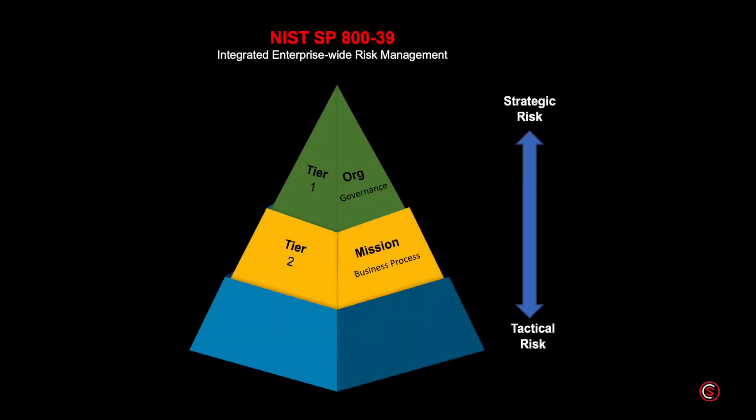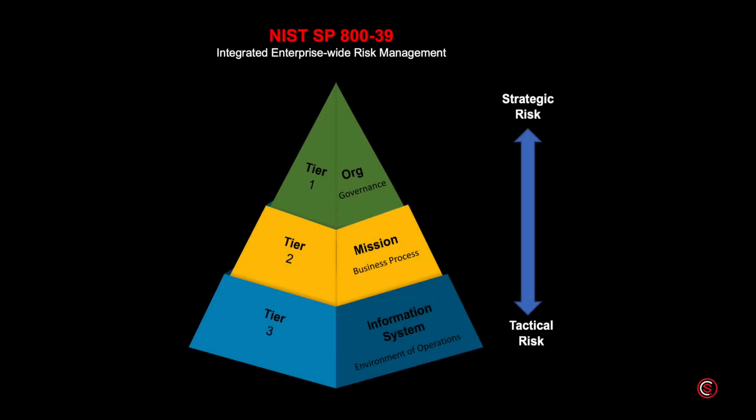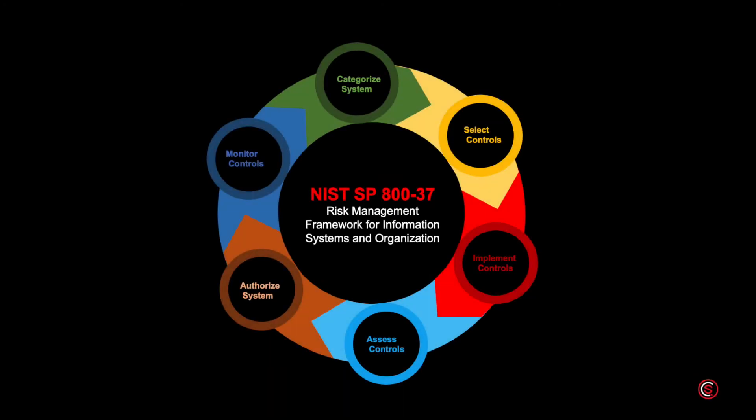Tier two addresses risk from a mission and business process perspective, guided by risk decisions at tier one. Here we define and prioritize core missions and business processes with respect to organizational goals. Tier three is more technical, addressing risk from an information system perspective guided by tiers one and two. This is where NIST Special Publication 800-37 — the Risk Management Framework — comes into play, providing a disciplined and structured process for managing information system security risk consistent with the organization's missions, objectives, and overall risk strategy.